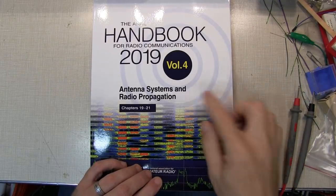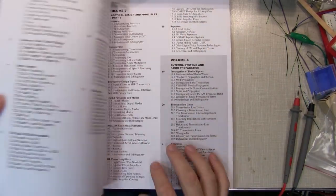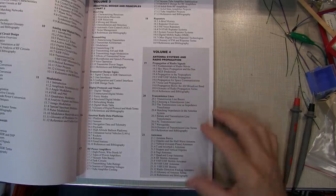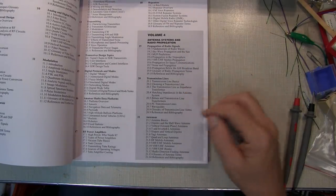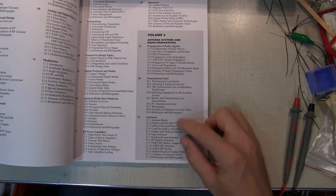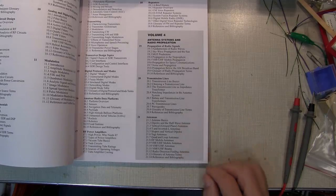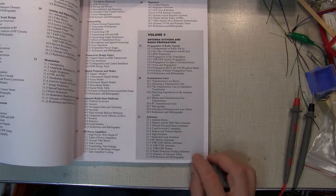Volume 4 covers antenna systems and radio propagation, including propagation mechanisms for radio signals, transmission lines and their characteristics, and antenna basics and a bunch of antenna descriptions and different antenna topics.